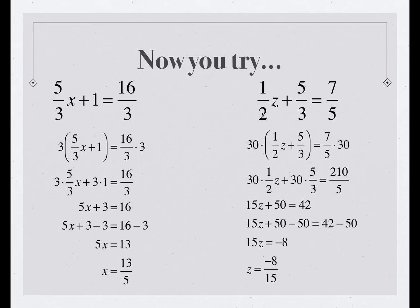For the second problem, 2, 3, and 5 are the denominators, and the common denominator for 2, 3, and 5, the least common denominator, is 30. So we'll multiply each side of the equation by 30, distribute, 30 times 1/2 plus z plus 30 times 5/3 equals 210/5.